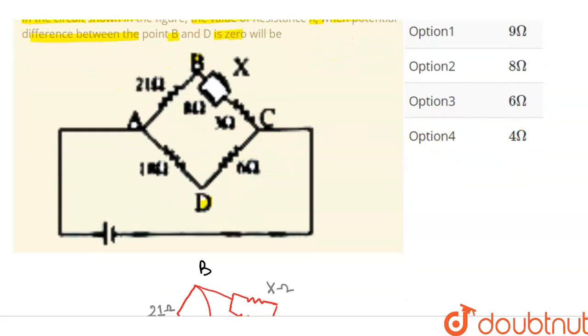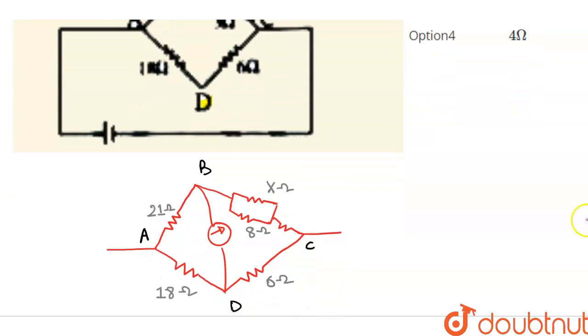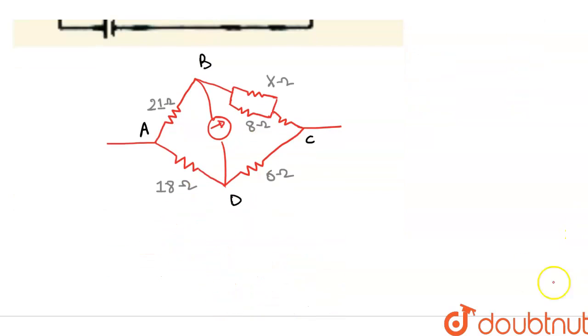Here, I have drawn this circuit in a much better way. So here, we have to get the value of this resistor that is given to us as X. So let's assume that when this entire system, we can see that this is a Wheatstone Bridge circuit. When this circuit is balanced,